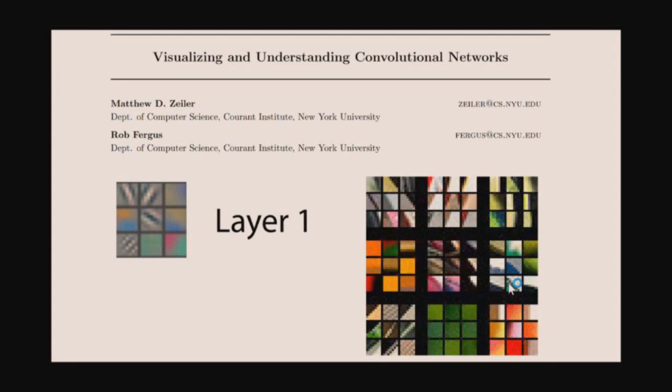Around 2012 through 2014, people started solving the fast and scalable piece in a big way, particularly by using GPUs — graphics processing units — which were designed to help you play computer games more quickly. They were basically linear algebra processors, and deep learning is basically a bunch of matrix-matrix products stacked on top of each other. So they turned out to work very well.